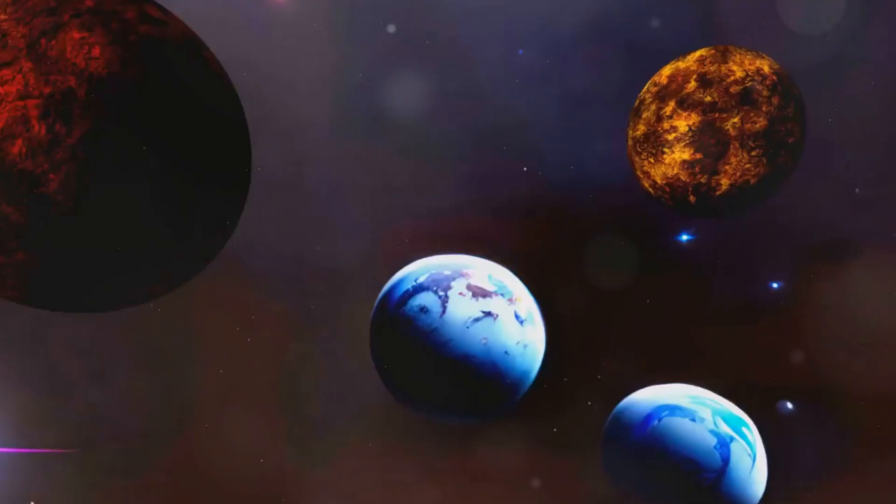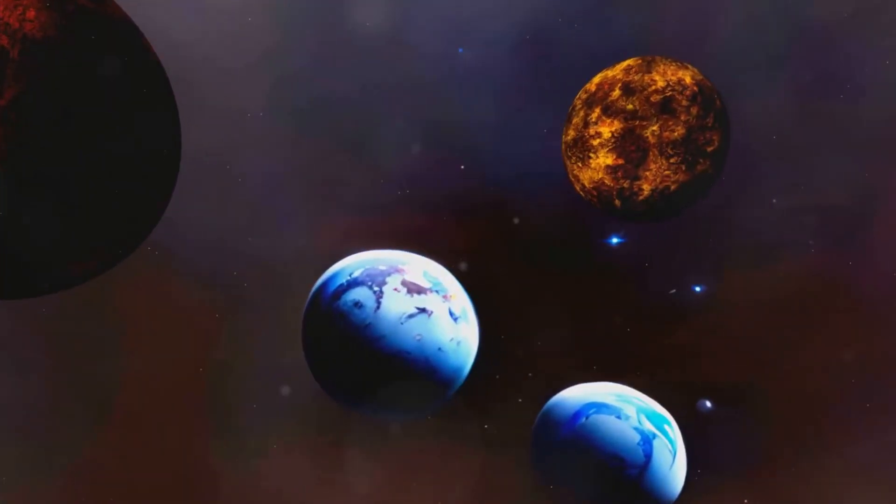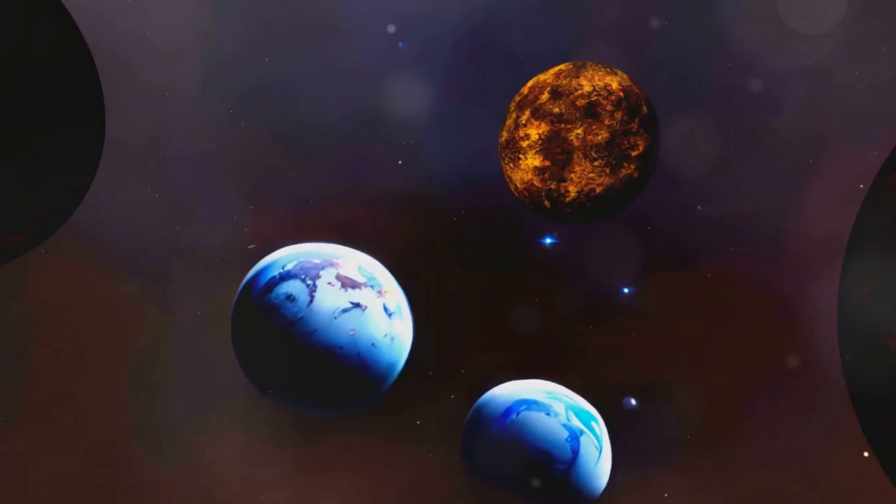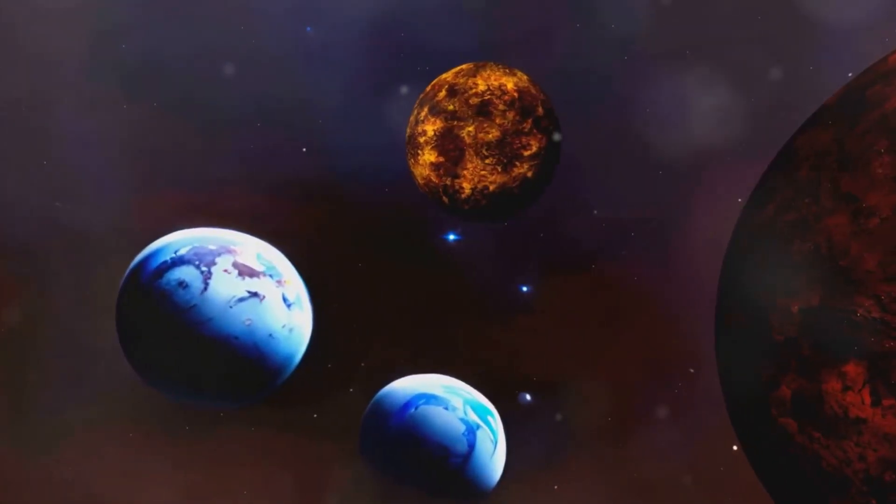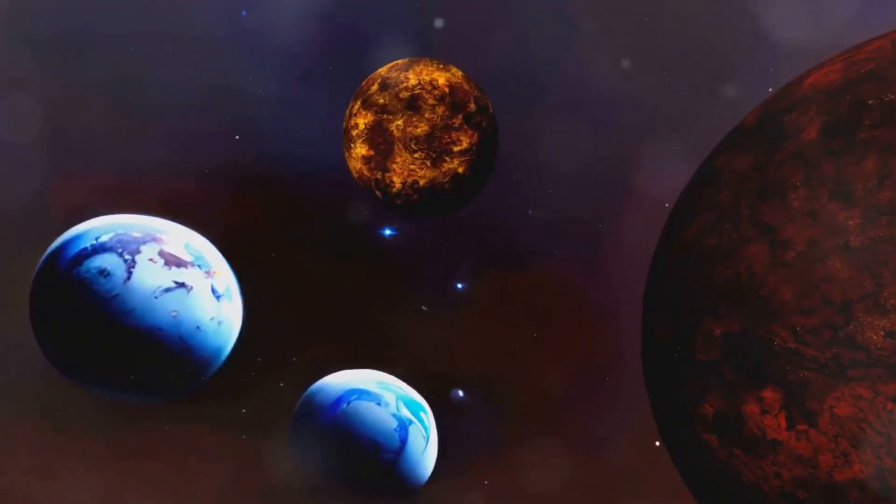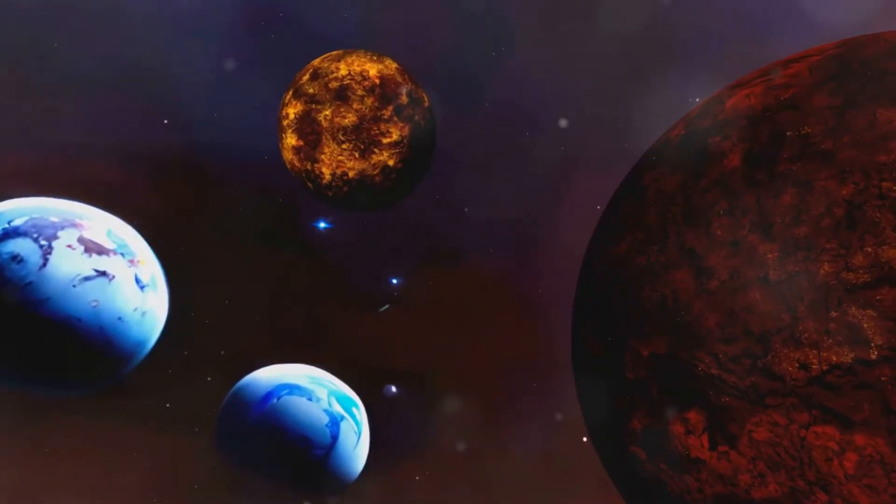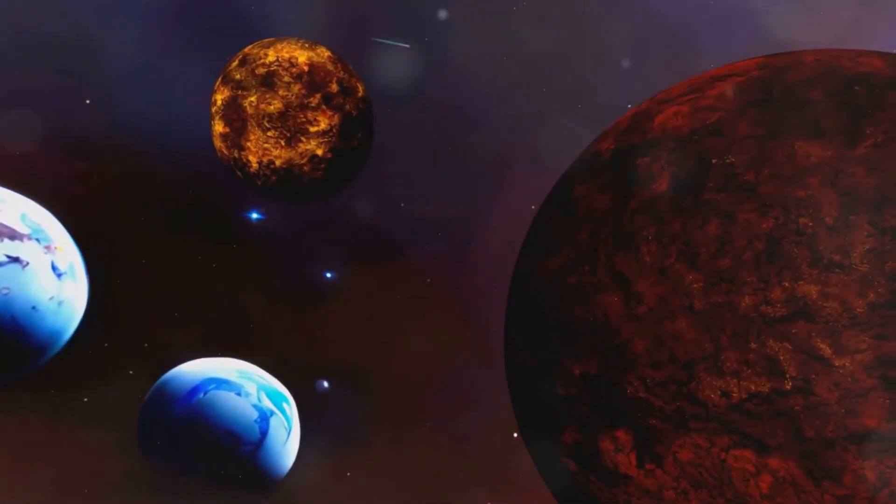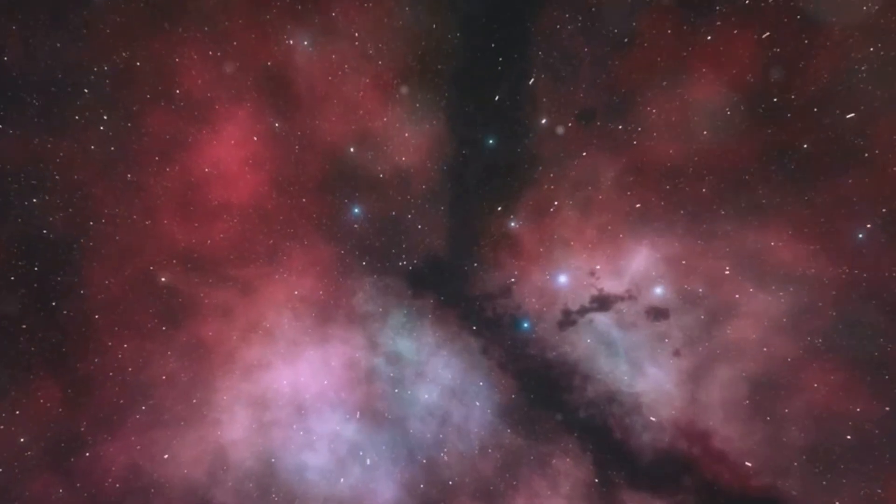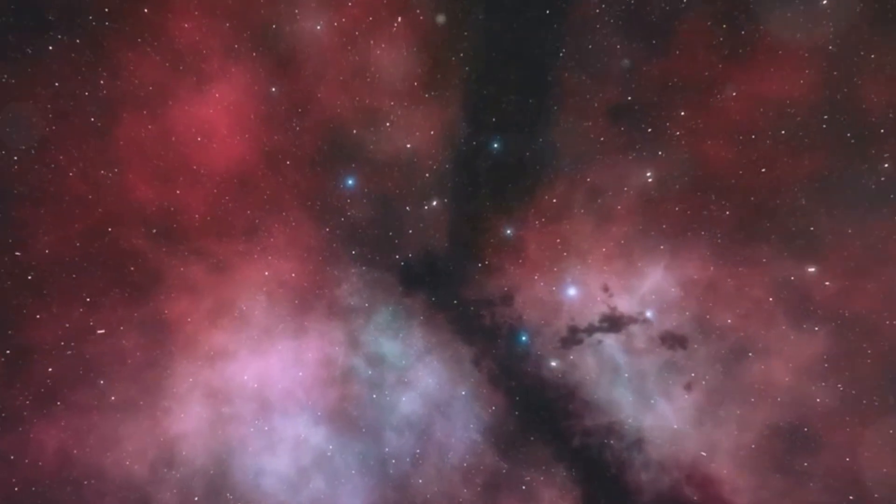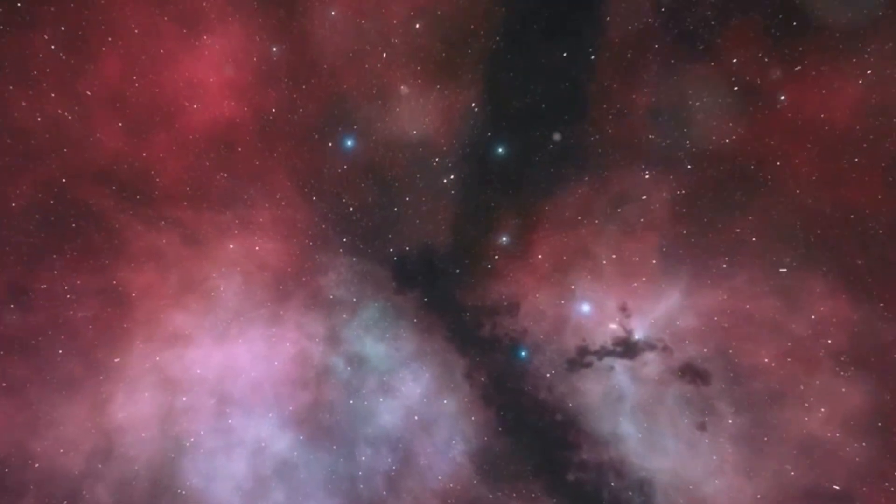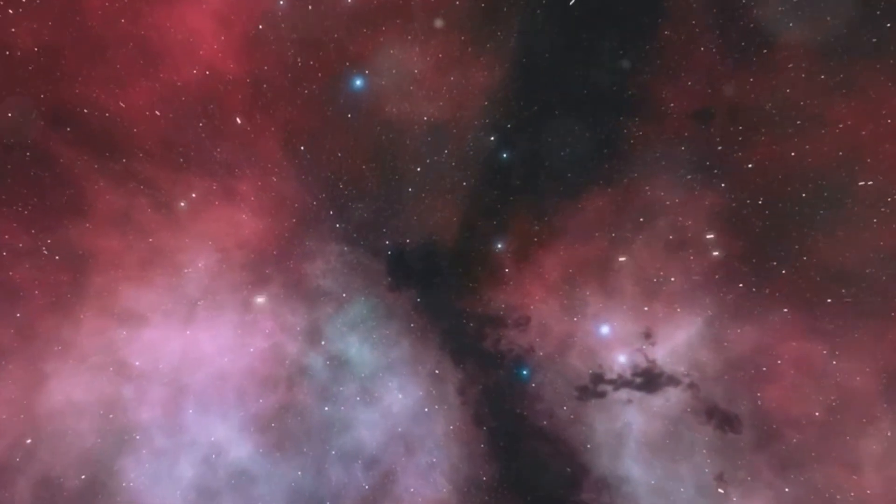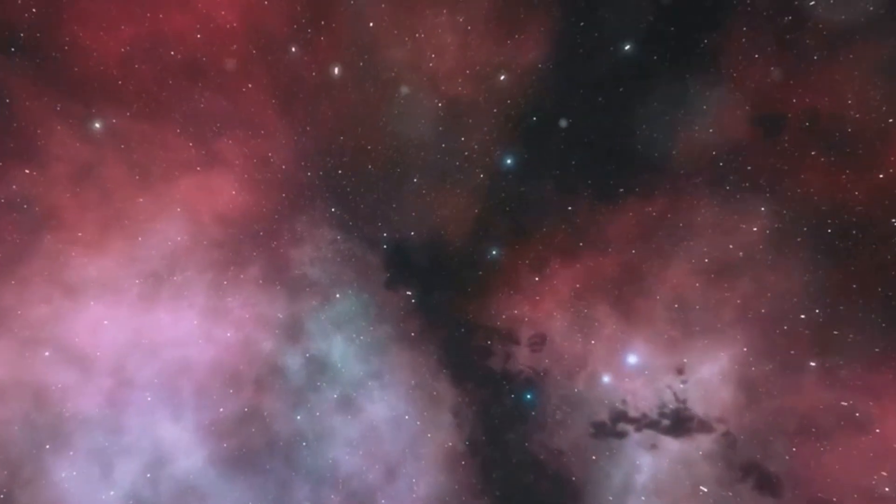Stars are incredibly diverse. They come in a variety of sizes, from dwarfs barely larger than Jupiter to supergiants hundreds of times the size of our sun. Their colors, too, span a spectrum, with shades dependent on their temperature. Blue stars are the hottest, while red stars are cooler. Each star goes through different stages of evolution, from a nebulous birth in a stellar nursery to a possible dramatic end as a supernova.